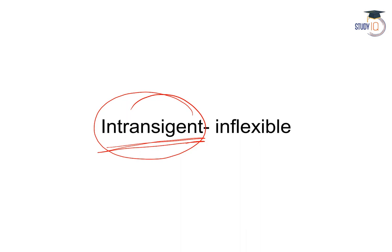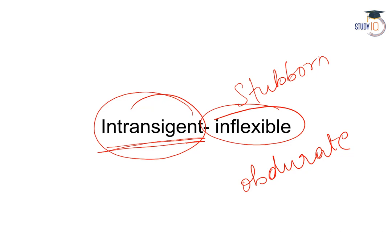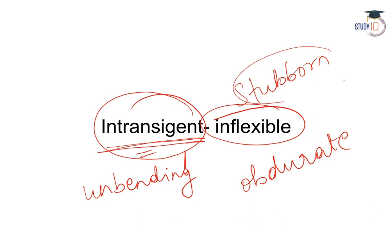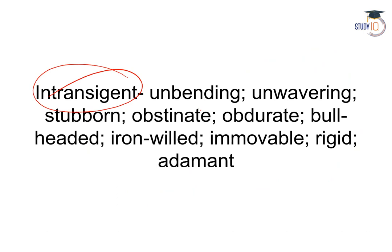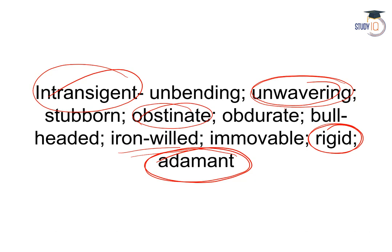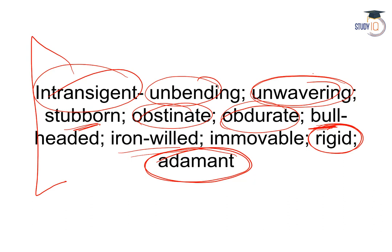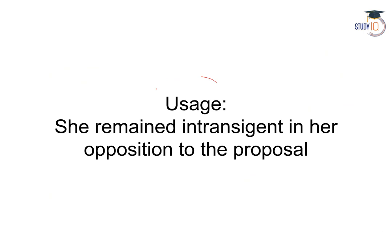The next word is intransigent. Intransigent shabd ka arth hota hai — jiddi hona, stubborn hona, inflexible hona, obdurate hona, unbending hona. Important synonyms: iron-willed, adamant, rigid, unwavering, obstinate, bullheaded. Usage: She remained intransigent in her opposition to the proposal — woh jid pe adi rahi.